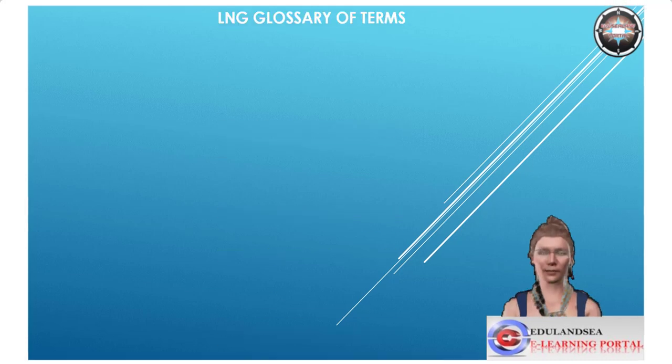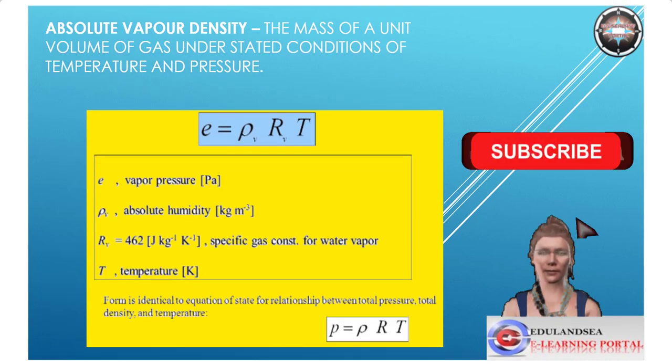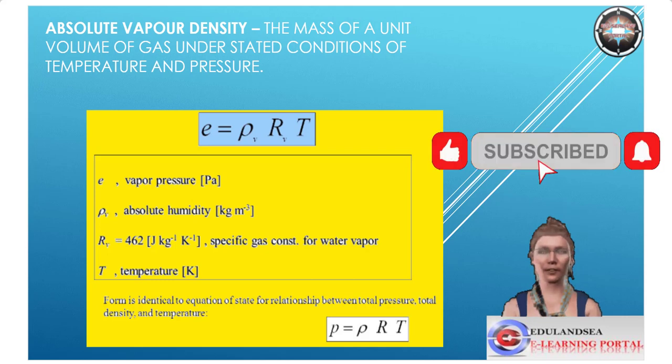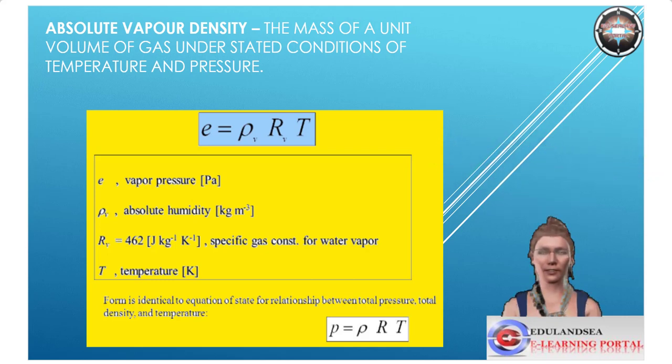LNG Glossary of Terms. Absolute vapor density: the mass of a unit volume of gas under stated conditions of temperature and pressure.